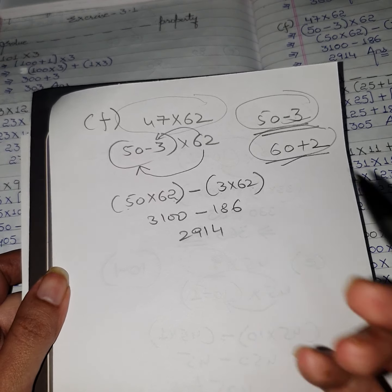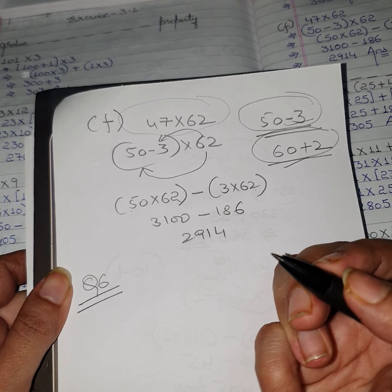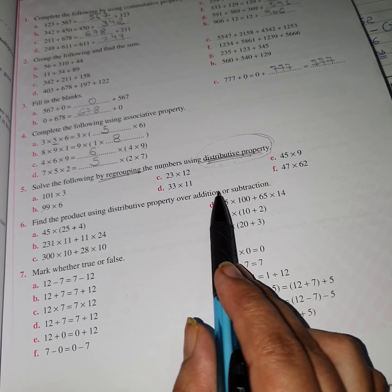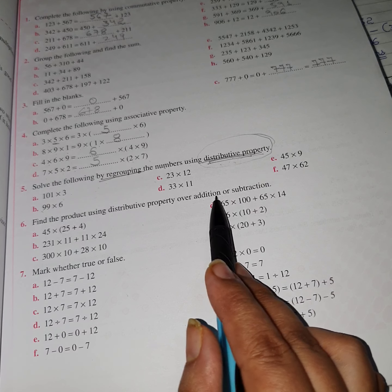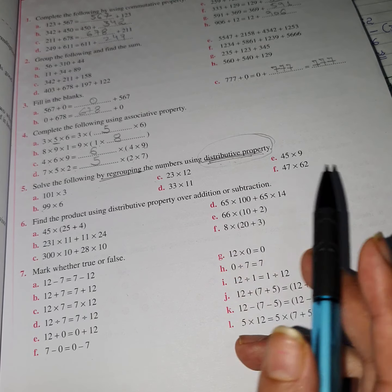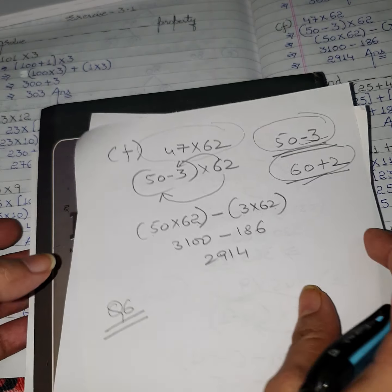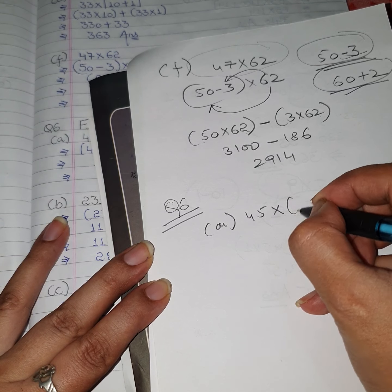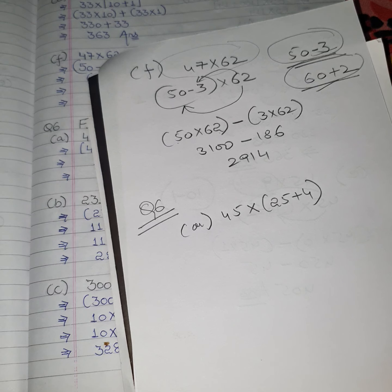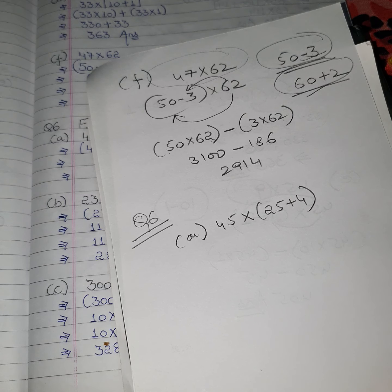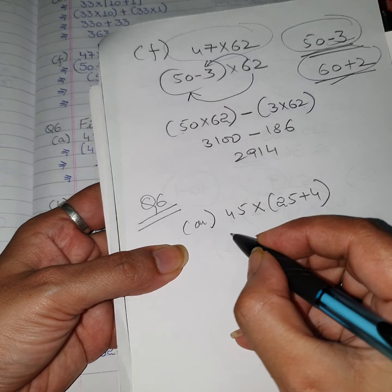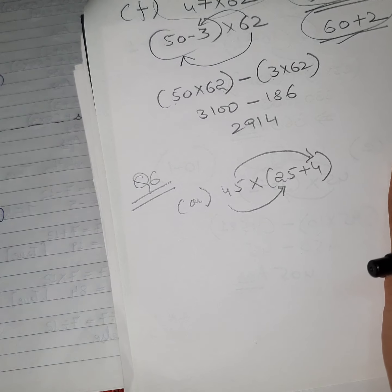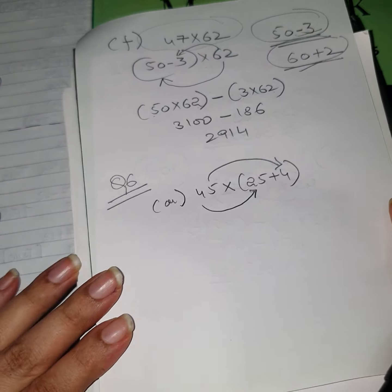Alternatively, if we break 23 instead: 23 = 20 + 3, so we write (20 + 3) × 12. Applying the property: 20 × 12 + 3 × 12. Multiply: 20 × 12 = 240 and 3 × 12 = 36. Add them: 240 + 36 = 276. The answer is the same — 276. So it does not matter which number you break; the result will always be the same.